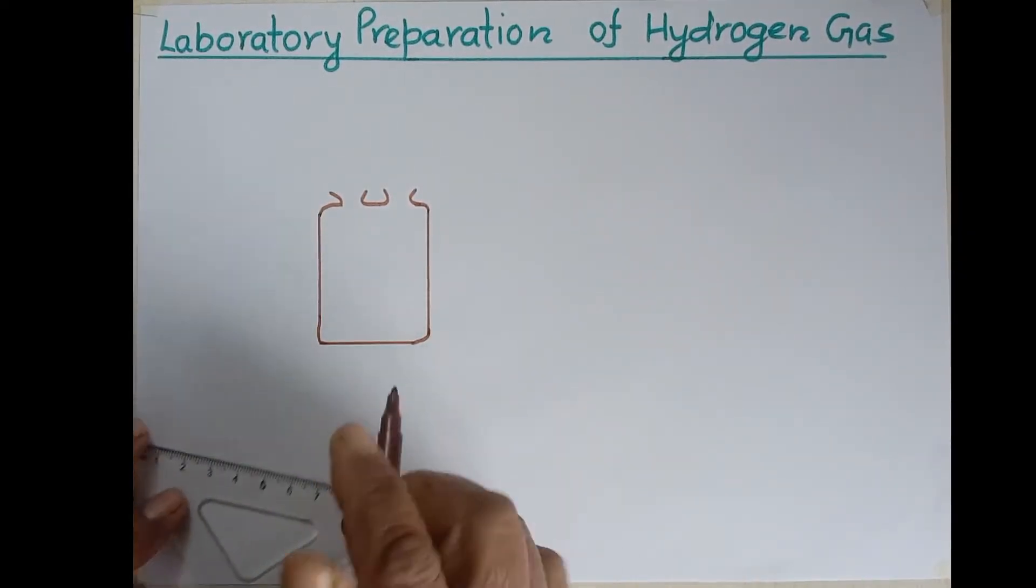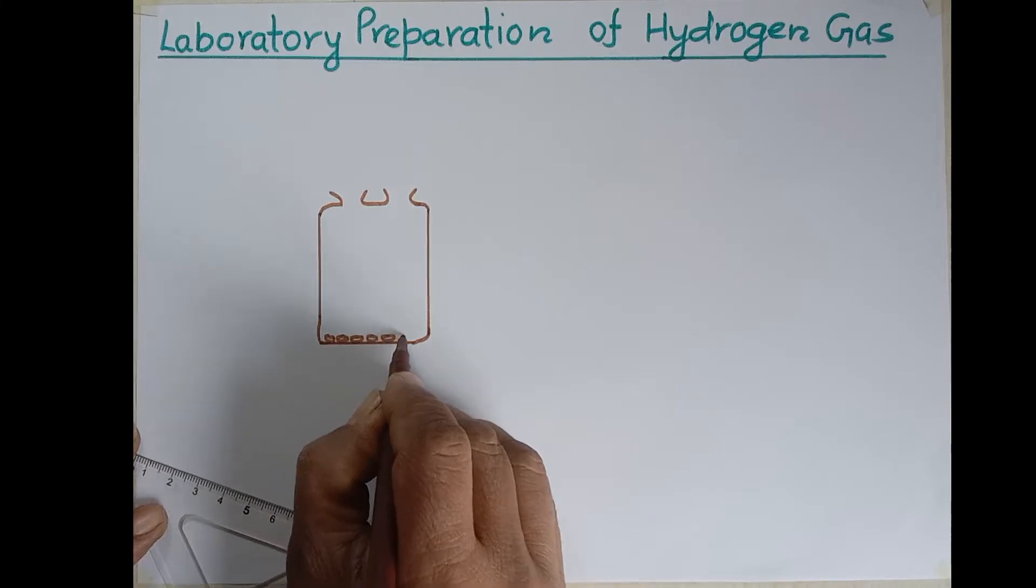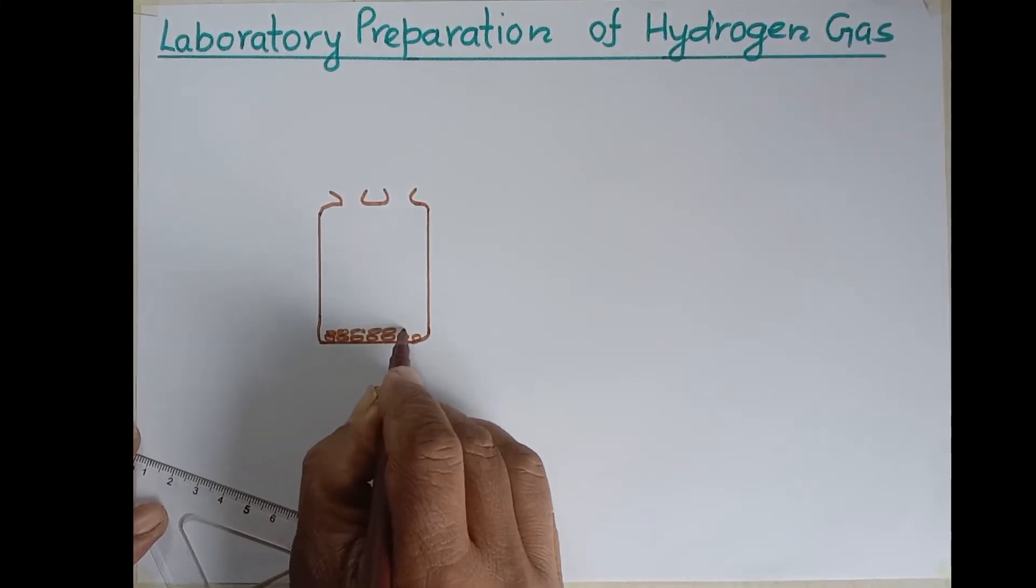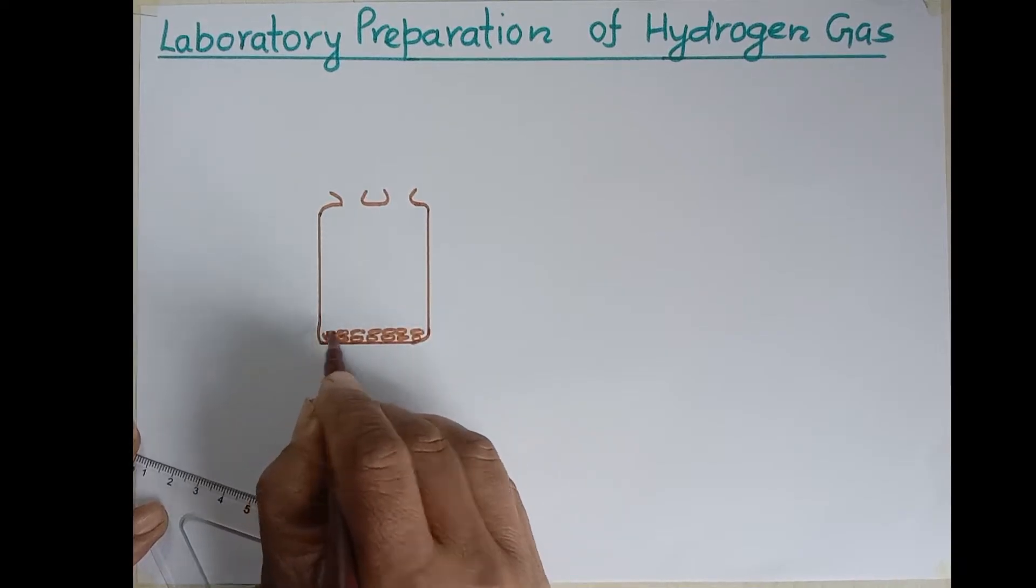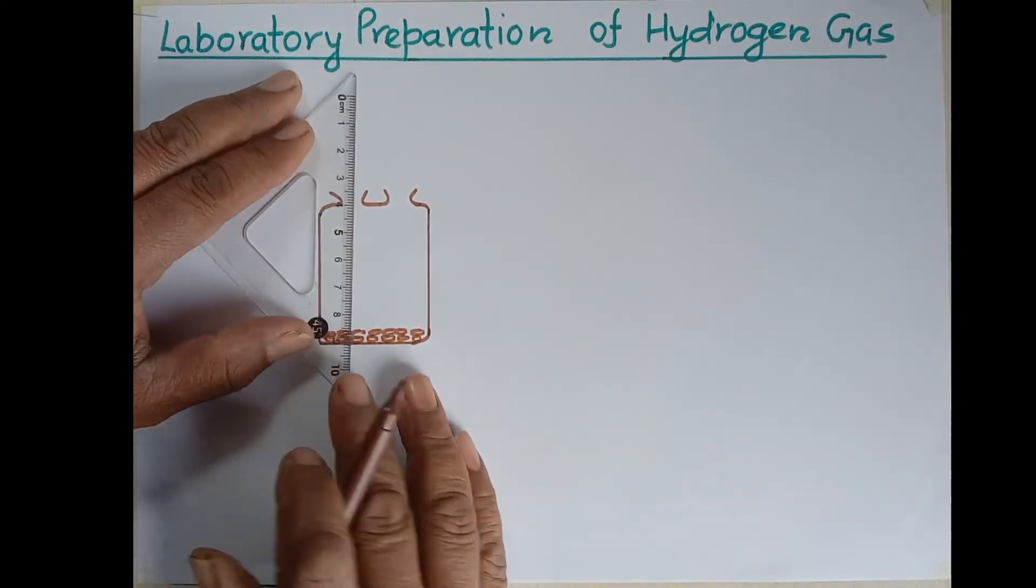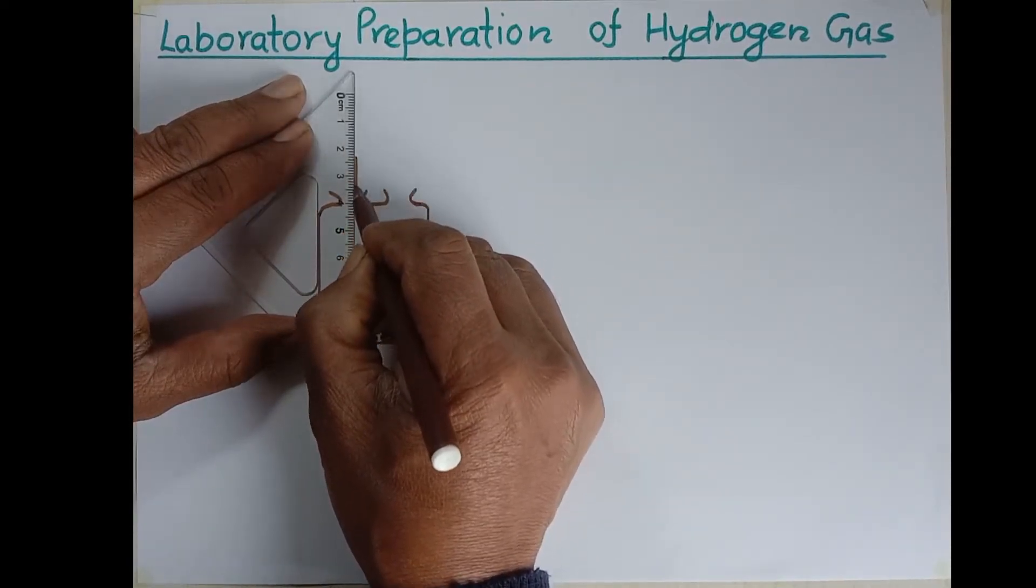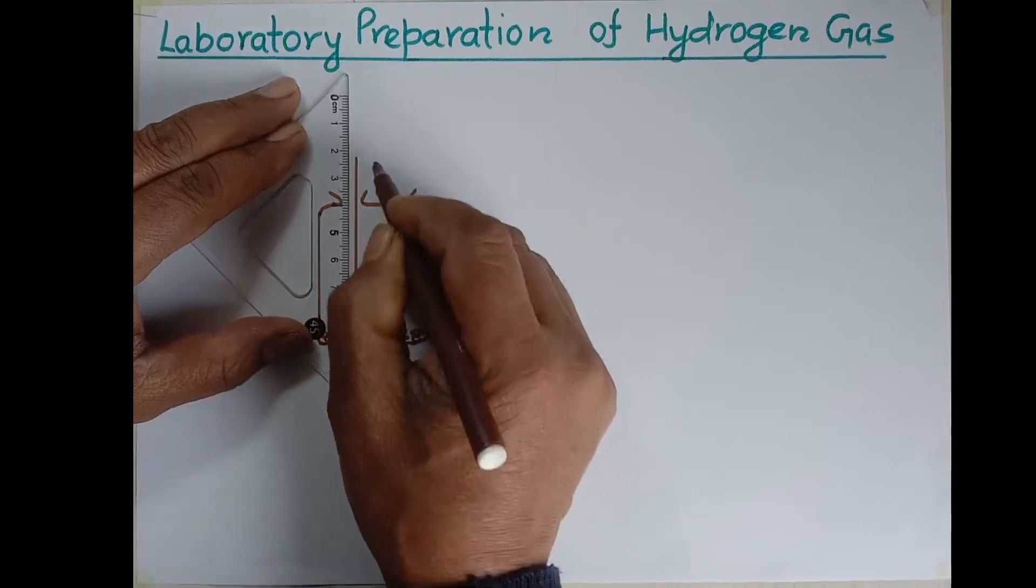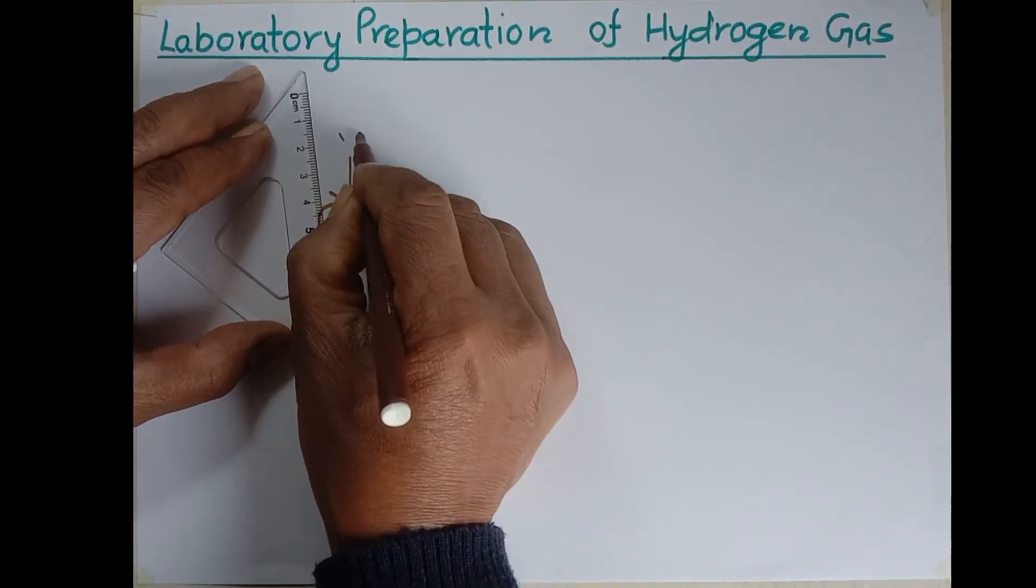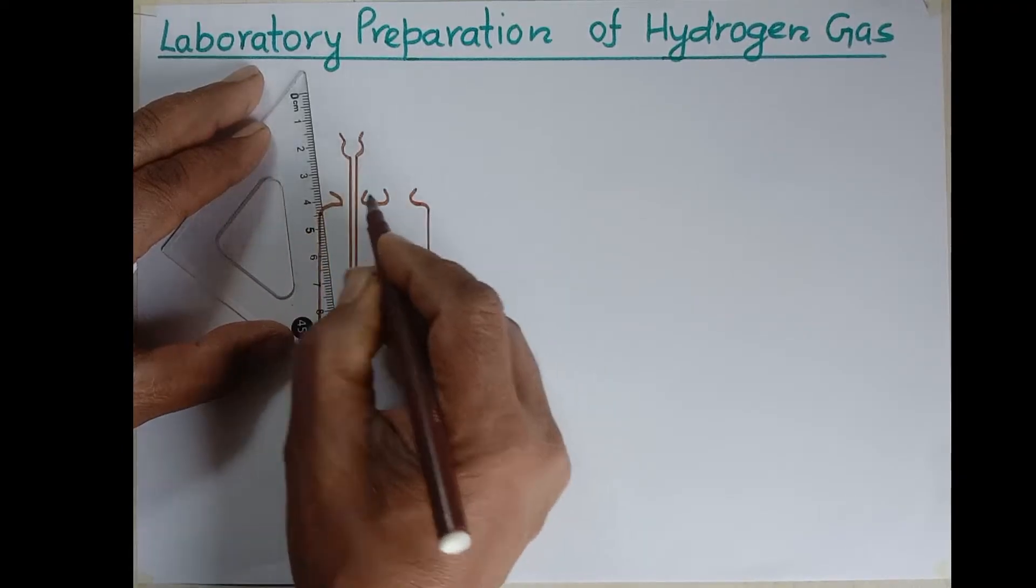I made these two openings and first we have to put zinc pieces in it because hydrogen gas is prepared by the reaction of zinc with dilute hydrochloric acid. And after this we have to adjust thistle funnel. I mean to say we have to fit thistle funnel in one of the mouths of wolf bottle with the help of cork this way.